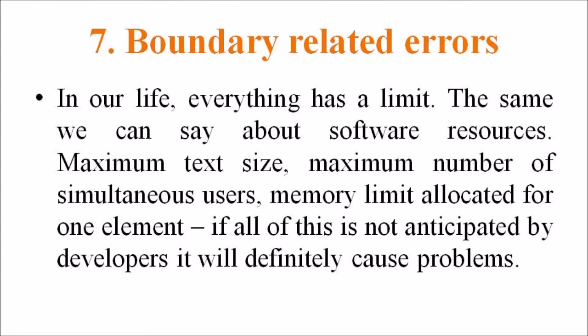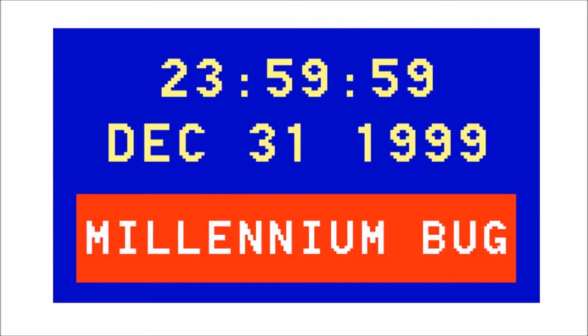The seventh one is the boundary related error. In our lives, everything has a limit, and the same can be said about software resources: maximum text size, maximum number of simultaneous users, the memory limit allocated for one element. If all this is not anticipated by the developer, it will definitely cause problems. Probably the most famous problem of this type is the Year 2000 problem, or the millennium bug, also known as Y2K.